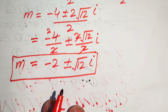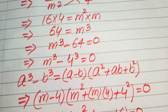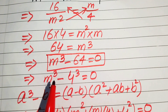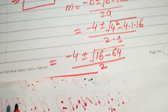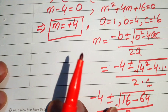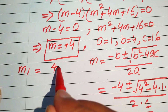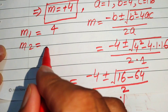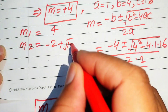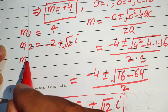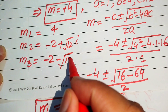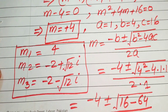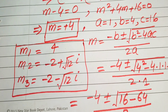Finally, we have the three roots of the given equation. Since the original equation reduces to a cubic, it has exactly three roots. The first root is real: m₁ equals 4. The second root is complex: m₂ equals negative 2 plus square root of 12 times iota. The third root is m₃ equals negative 2 minus square root of 12 times iota. These are the final three roots, and thank you so much for watching — please subscribe for more exciting videos.